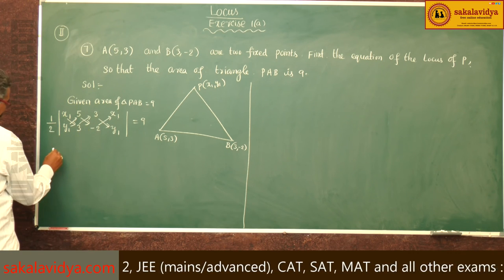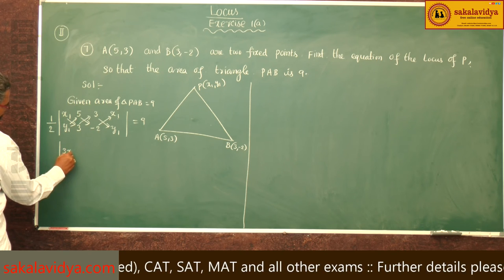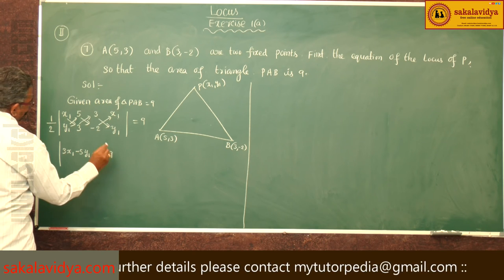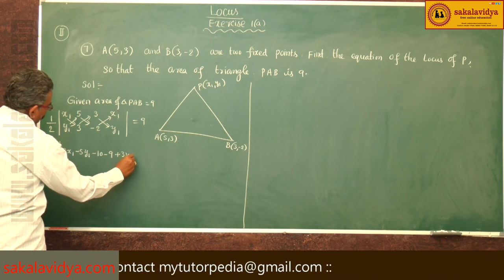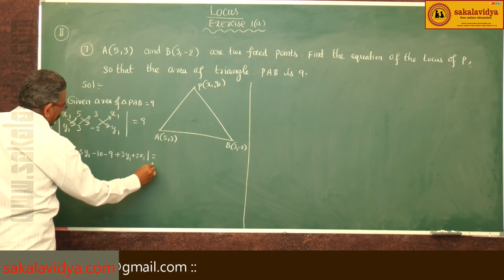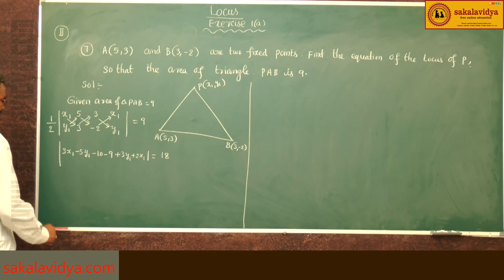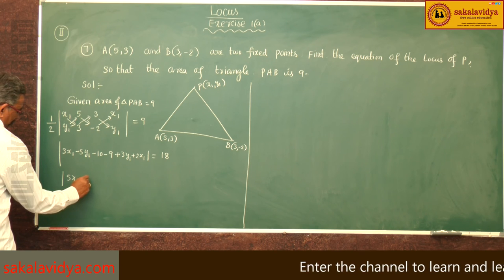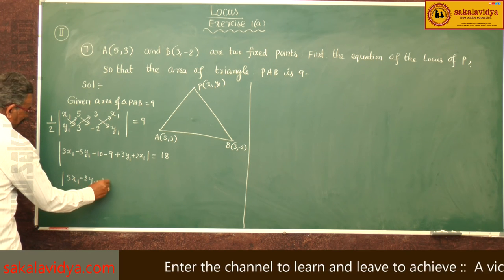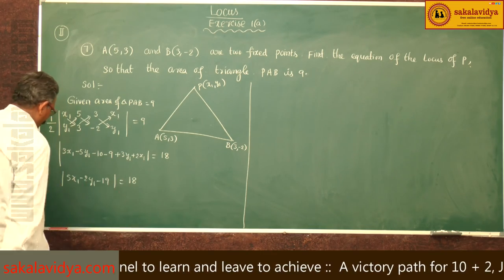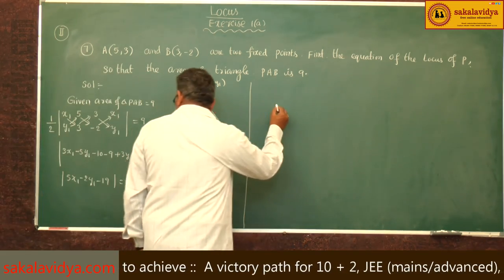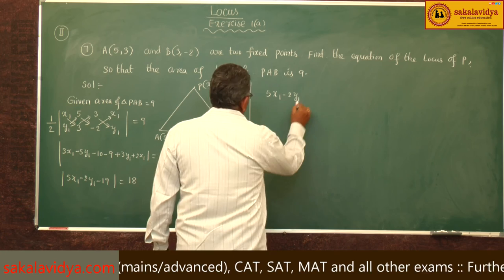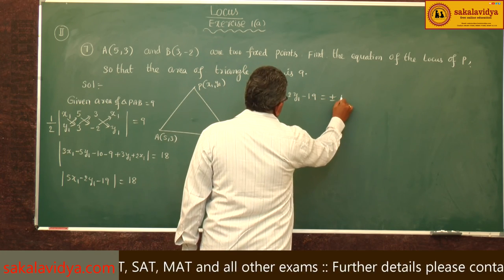Using the crisscross method: modulus of (3·x1 - 5·y1 - 10 - 9 + 3·y1 + 2·x1) equals 18. Simplifying inside: modulus of (5·x1 - 2·y1 - 19) equals 18.